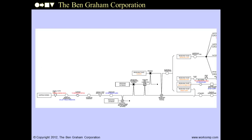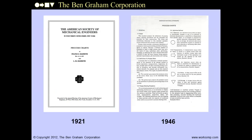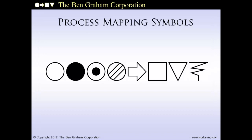When do you think companies first started using a structured method to map their processes? If you were under the impression that process mapping got its start in the 90s, the 80s, or even the 70s, you'd still be off by about half a century. Frank and Lillian Gilbreth introduced American management to a structured method for documenting workflow at the 1921 meeting of the American Society of Mechanical Engineers. In 1946, ANSI adopted an evolved Gilbreth methodology as the standard for process charts. ASME adopted the same standard in 1947. The roots are securely planted in the scientific management work of Frank and Lillian Gilbreth and other pioneers in the development of process improvement methods.